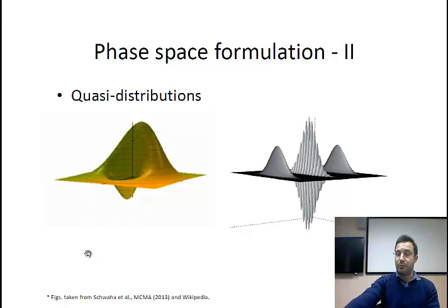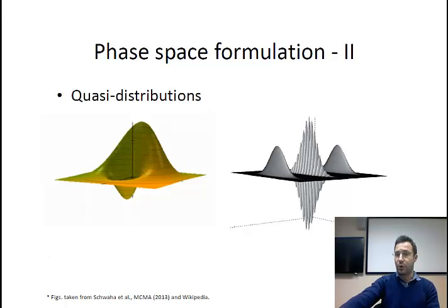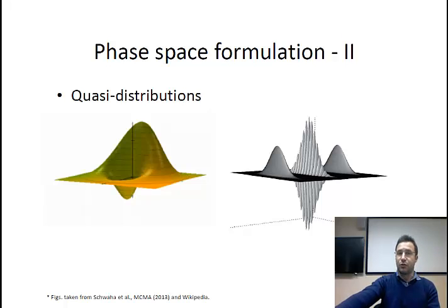So strictly speaking, these are not distribution functions. There is a price to pay in this formulation, and the price is that you have negative values in the distribution functions. This is why we always refer to them as quasi-distributions and not just distributions.